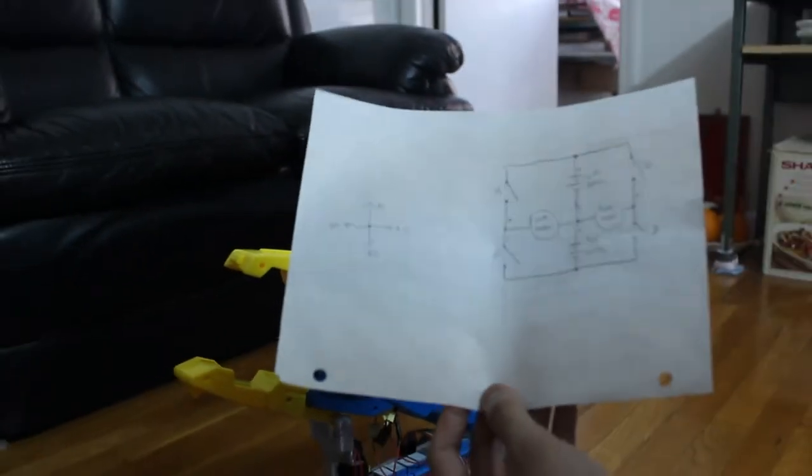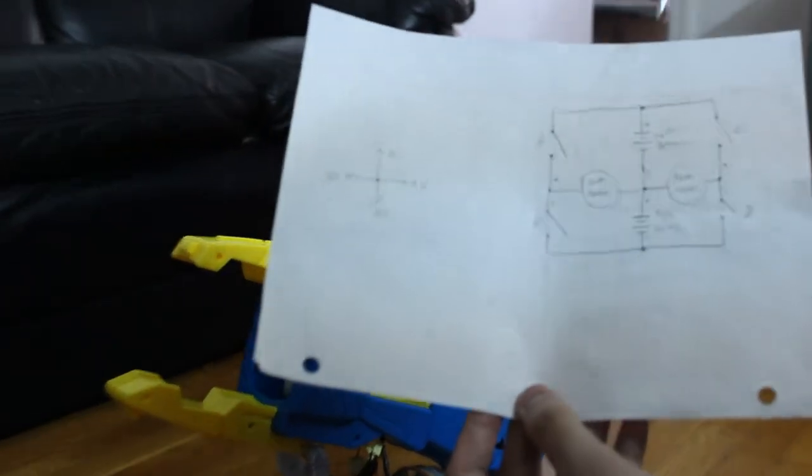This is the circuit that I've created for the controls. Now, I've labeled everything as switch A, B, C, and D.